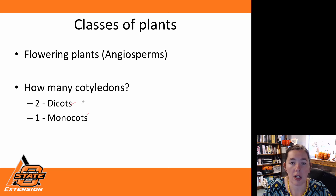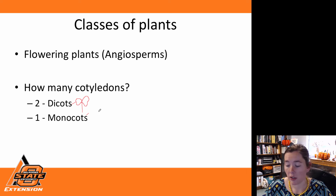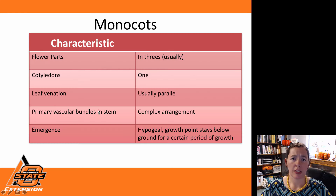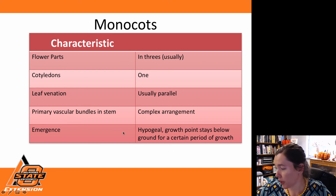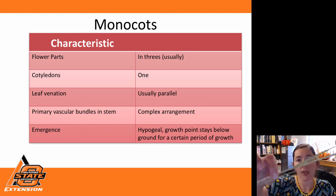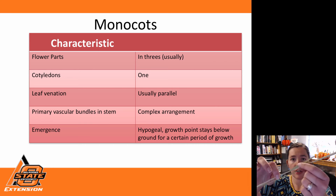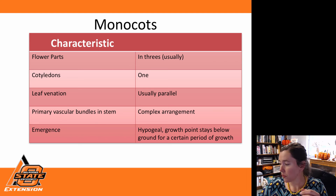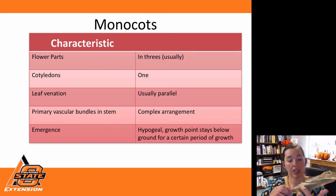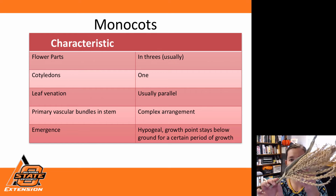Dicots have two cotyledons and monocots only have one. If we think about something like cotton, we've got those two little cotyledons. For monocots, we have a few other characteristics we can look for: our flower parts are typically in groupings of three — three, six, nine. Leaf venation is typically parallel. If we look at this grass plant, we've got these parallel veins, very indicative of monocots. We can also see parallel veins in this corn plant leaf.